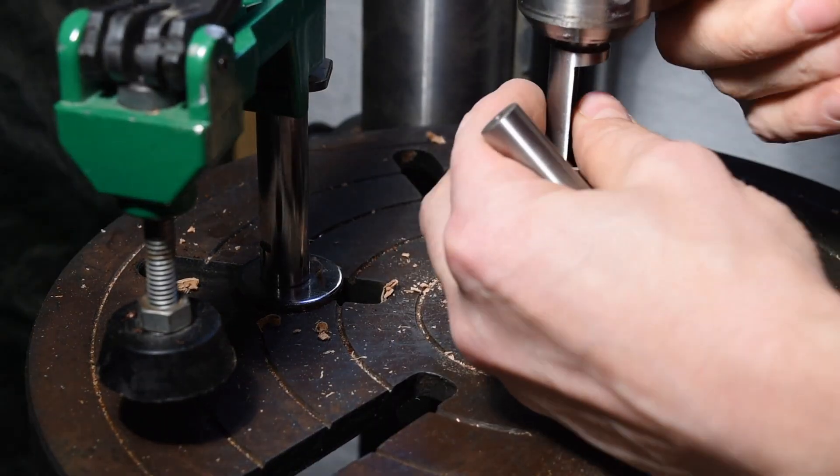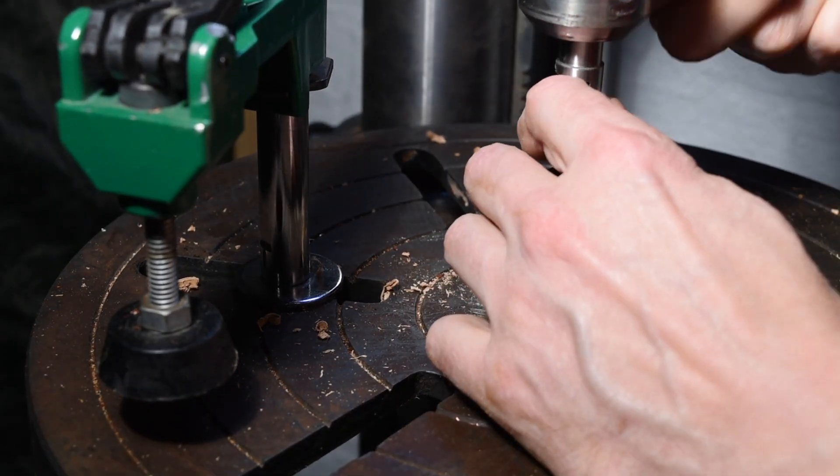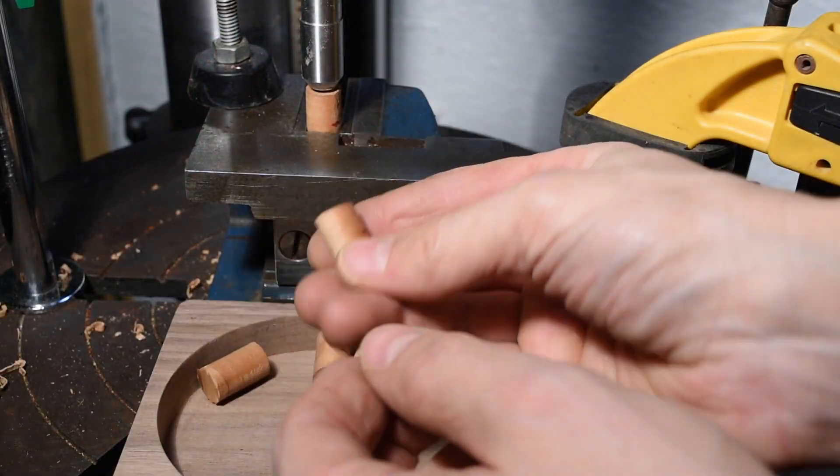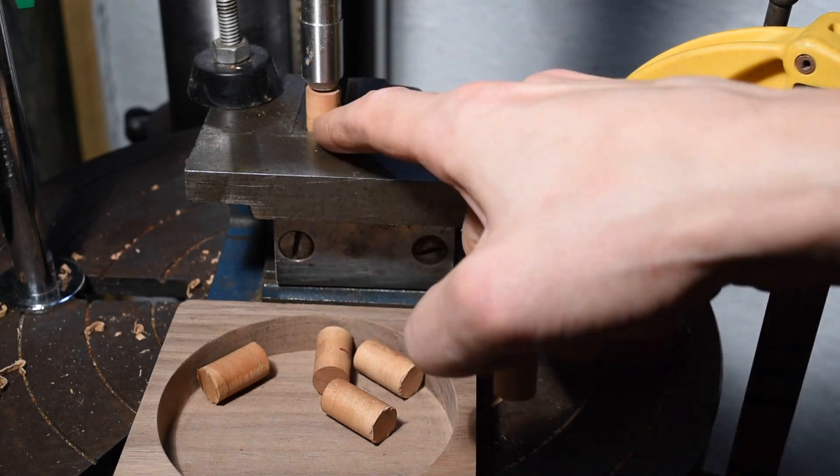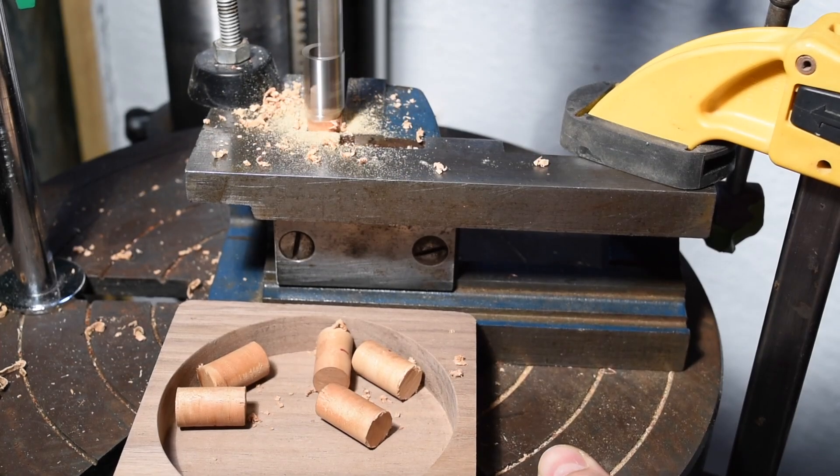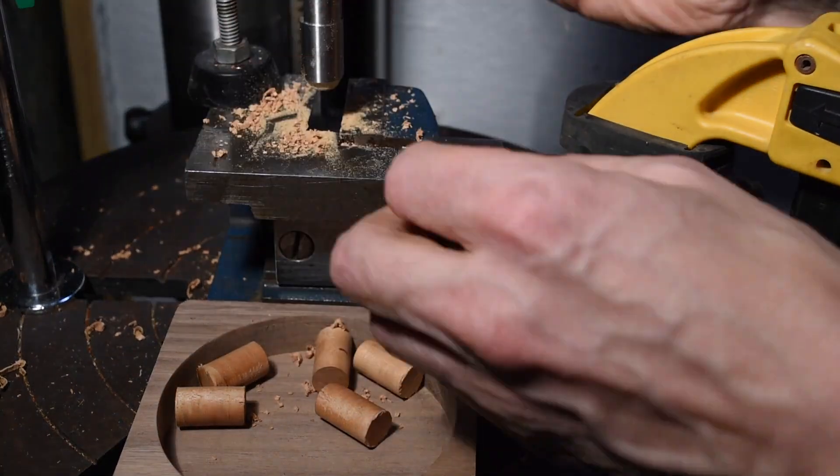Then I'm gonna change the plug cutter to 3 eighths and then mark them about half inch. You can make them shorter, doesn't matter. Again I'm gonna cut it with a 3 eighths plug cutter like this.